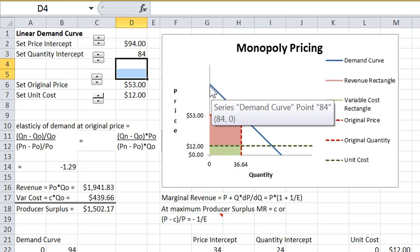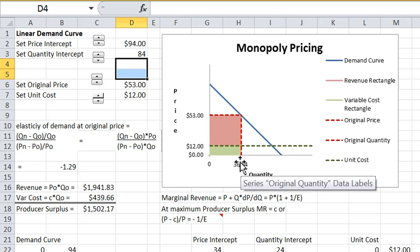You'll recall that when we had the revenue maximum that happened at the point where elasticity was unity. The surplus maximum occurs where this net rectangle is biggest. And we're going to look at the conditions that determine that.